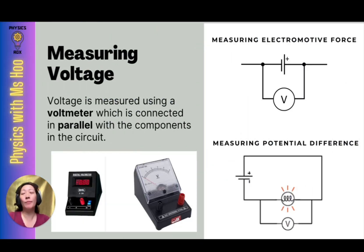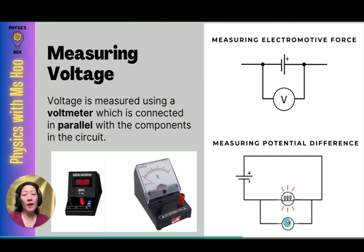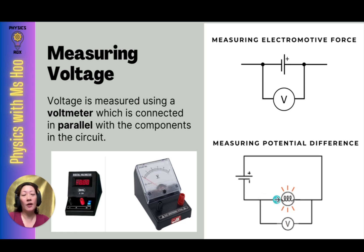Let's learn about how we would measure voltage. Voltage is measured using a voltmeter, which is connected in parallel with the components in the circuit. Potential difference is the work done to move the charge from one point to another, which is why you have to put the voltmeter in parallel. If you wanted to measure the potential difference across a lamp, you'd connect the voltmeter in parallel across that lamp, meaning the voltmeter and the lamp share the same starting and ending point. We place the voltmeter in parallel so we can measure the work done between those two same points.